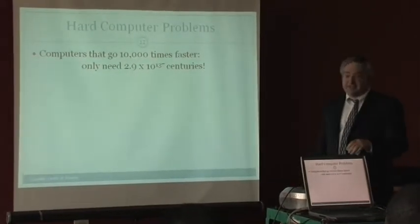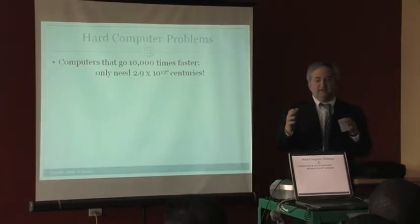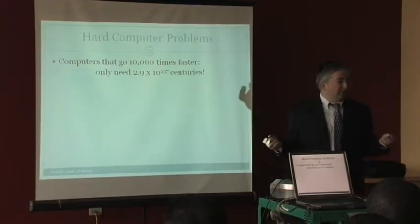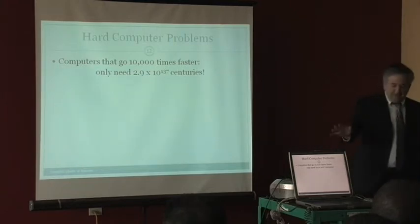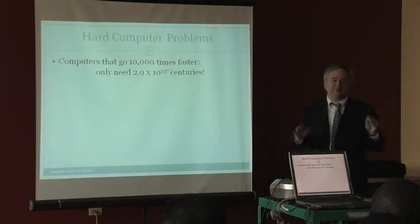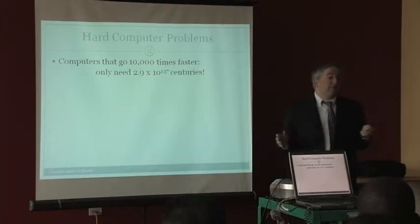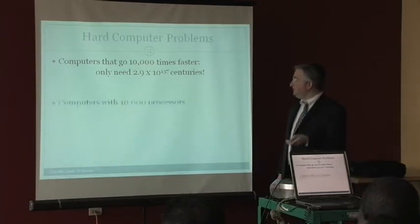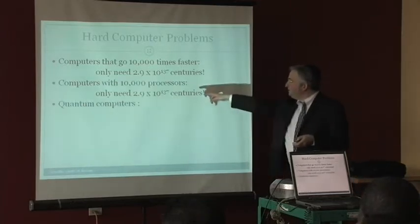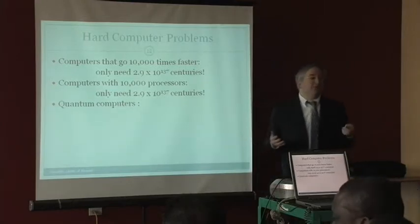Now, question. What happens if you have a supercomputer? Nowadays, all the IBM computers are all duo processors. What does that mean? It has two different processors. And Macs, I'm sure, have better. But, let's say you had a computer with 10,000 processors. How does that help? Same thing. 10 to the 137 centuries. You're not doing much better.